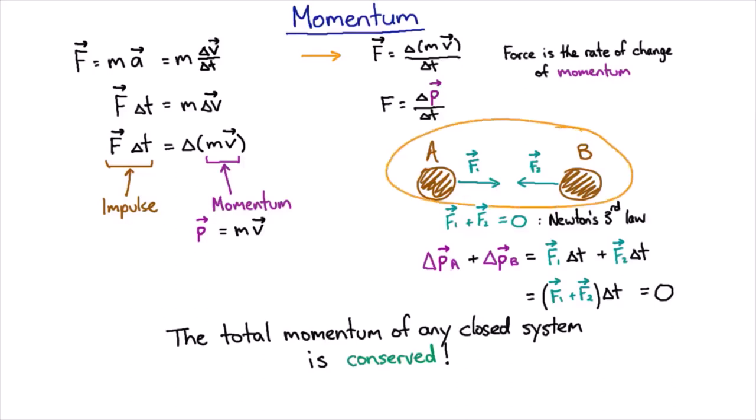So the total momentum of this system was conserved, and remember we didn't know anything about these two forces, why they were there, only that they obeyed Newton's third law. And all forces do obey Newton's third law, so no matter what A and B were, we knew that the momentum was conserved. And in fact, that's true for any closed system.